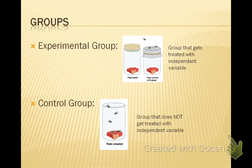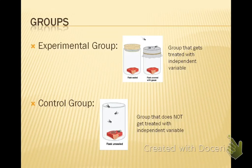In any experiment you have two groups. The experimental group is the group that gets treated with the independent variable — in Redi's case, the covered jars. The control group is the group that does not get treated with the independent variable — he just left that jar open and let flies go in and out.